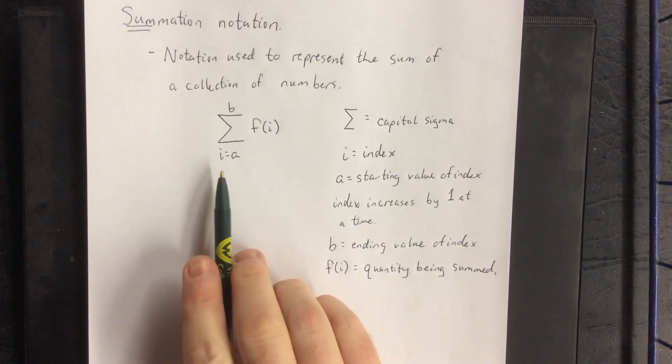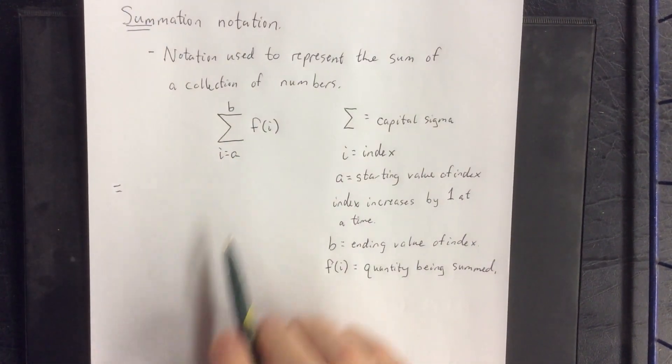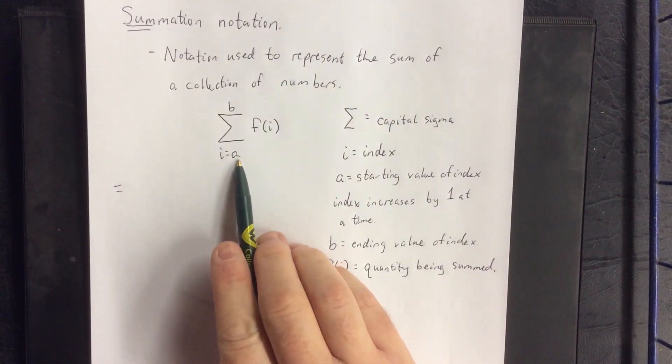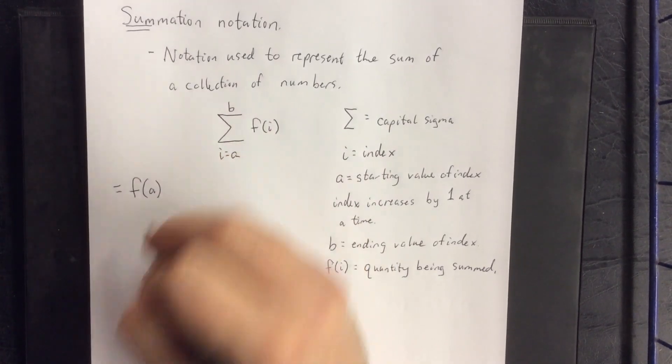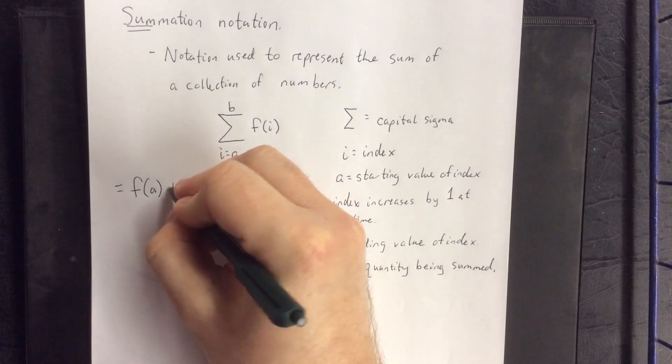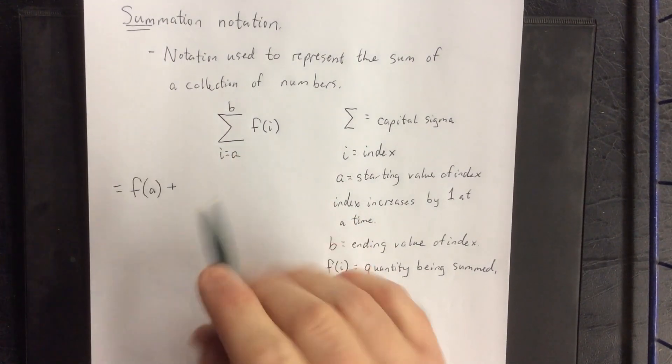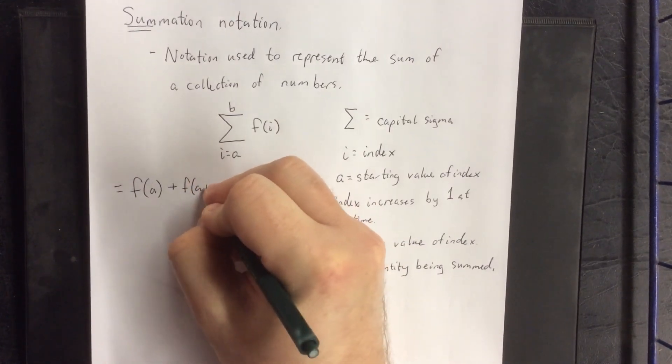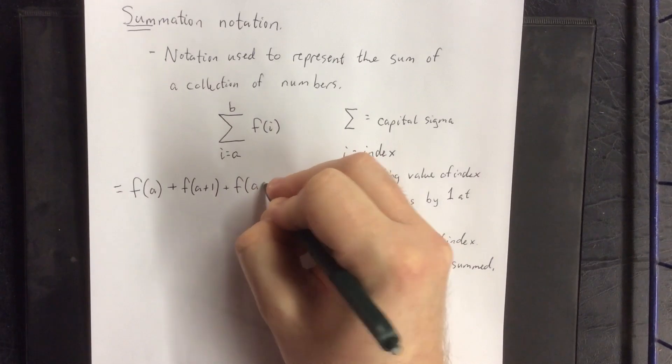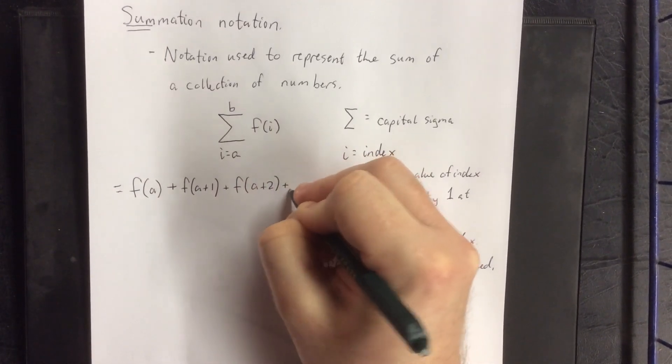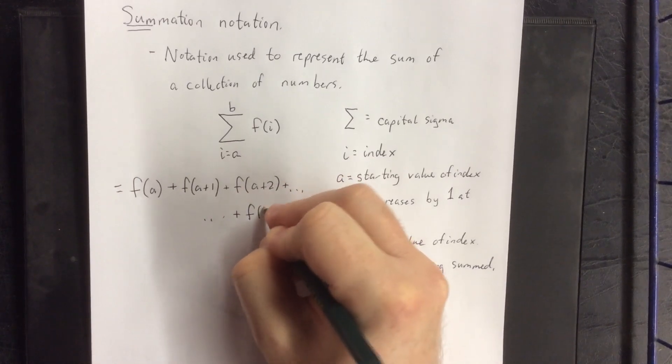So in the given notation, if I were to expand this out to let you know the things that are being added, the first thing that I would do is plug I equals A into this function, whatever it happens to be. So F of A. Because it's a summation, we're then going to add the next number, that is what I get when I add one to this value. So F of A plus one. Then the index continues to go up one at a time until we get to whatever that last value is.